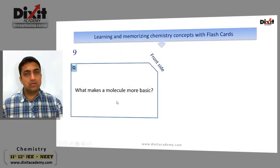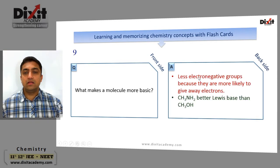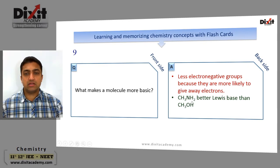What makes a molecule more basic? Less electronegative groups, because they are more likely to give away electrons. Example: CH₃NH₂ is a better Lewis base than methanol.